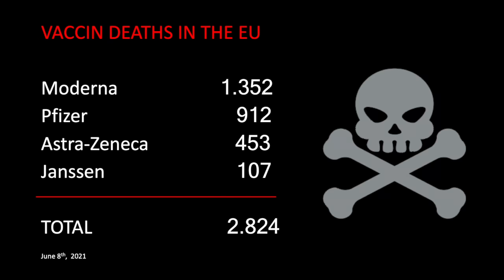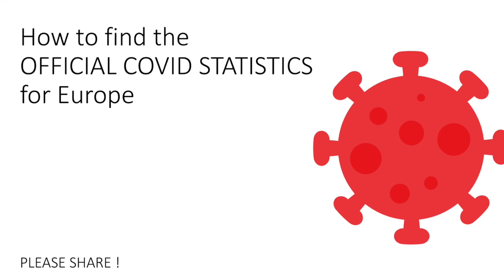Now let's look at the death rate. The most deadly vaccine — number one — is Moderna with 1,352 fatalities; Pfizer has 912, which is still a solid, colossal number; AstraZeneca has 453; and Janssen, new on the market, is still fairly low with 107 cases. The total is nearly 3,000 dead in the EU, and these are official EU numbers. One has to expect that one in five or even one in ten cases are reported, so the true number is probably much higher. Let's get this information out to as many people as possible so we can have a proper discussion about the subject. It's important to stay informed, and these numbers are official. Thank you very much for listening.